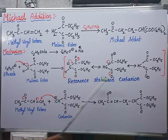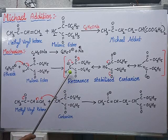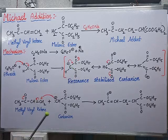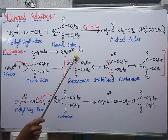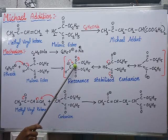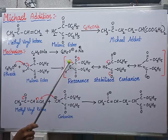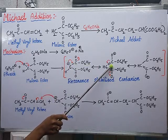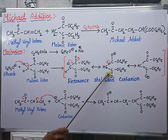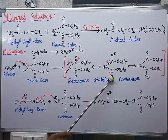This carbanion undergoes resonance stabilization. Since the methylene group is flanked between two carbonyl groups, it can undergo resonance with the pi bonds. I am shifting this pi bond upward — oxygen gets a negative charge, one carbon gets a positive charge — and these form a double bond. This is the first resonating structure.